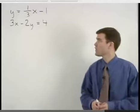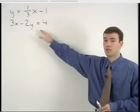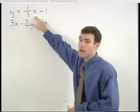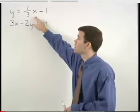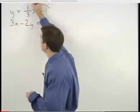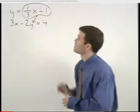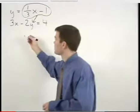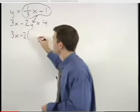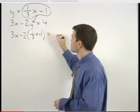To solve this system of equations by substitution, since our first equation tells us that y equals 1/3x minus 1, we can substitute this 1/3x minus 1 in for the y in our second equation, which becomes 3x minus 2 times (1/3x minus 1) equals 4.